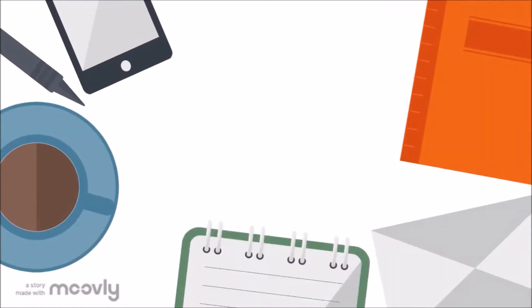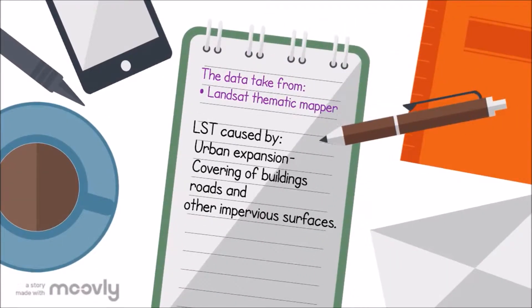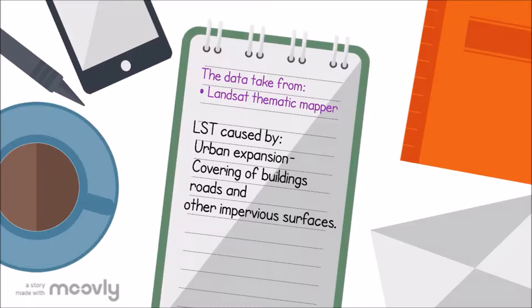For the second journal, the data was taken from Landsat. In this journal, land surface temperature is caused by urban expansion, such as the covering of roads and other impervious surfaces.